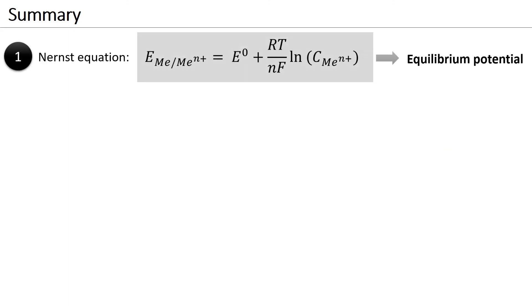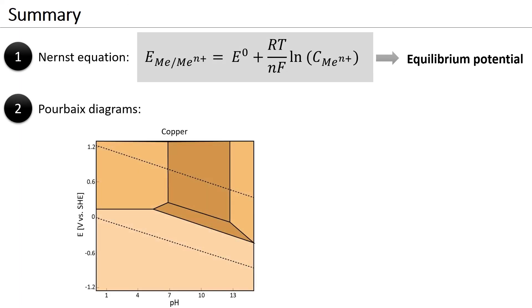In this video, we have learned three essential key points. First, the Nernst equation allows the calculation of equilibrium potentials. Graphically, these potentials can be plotted as lines in so-called Pourbaix diagrams. The regions between the lines indicate the different stability domains of immunity, passivity, and corrosion.